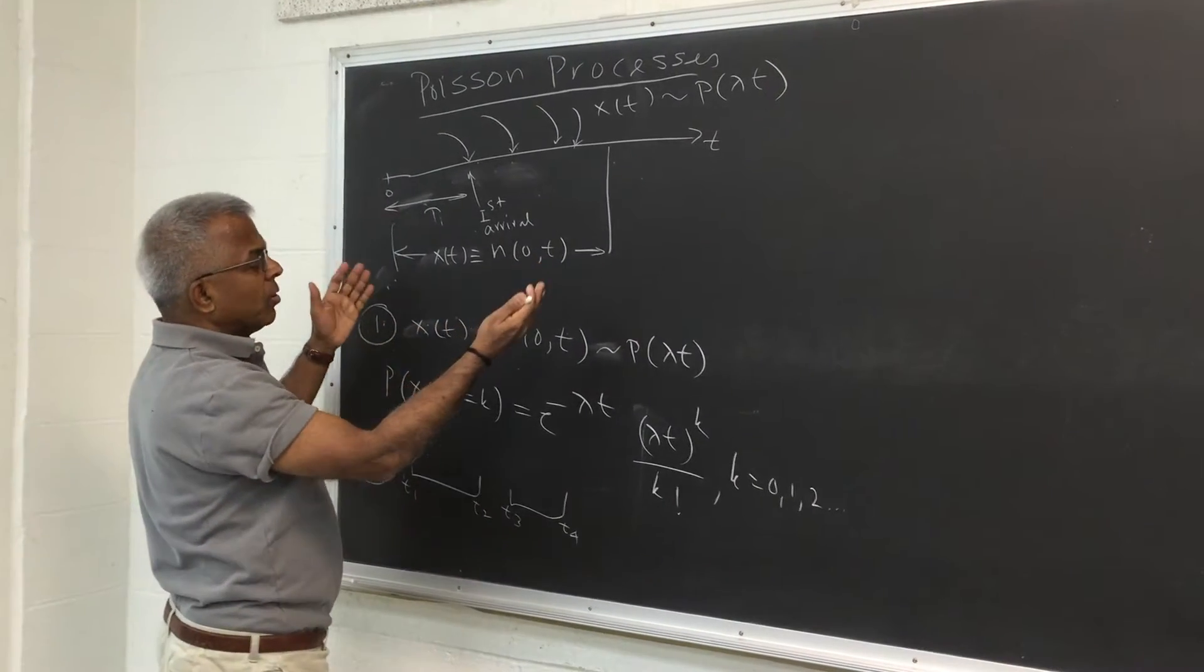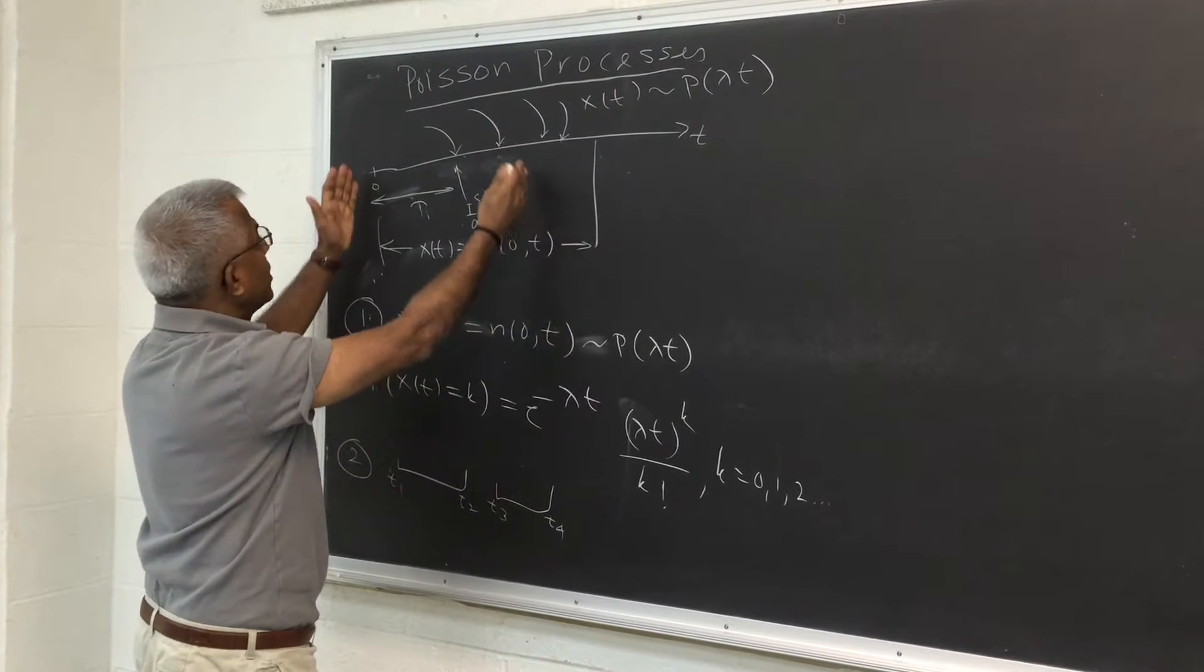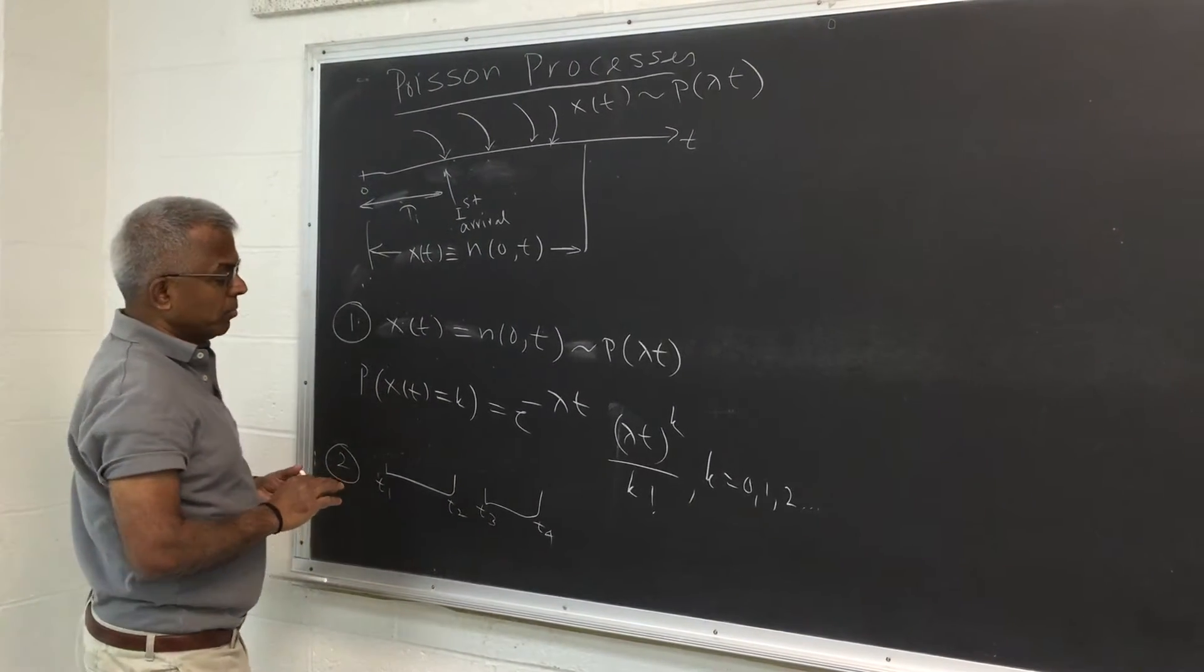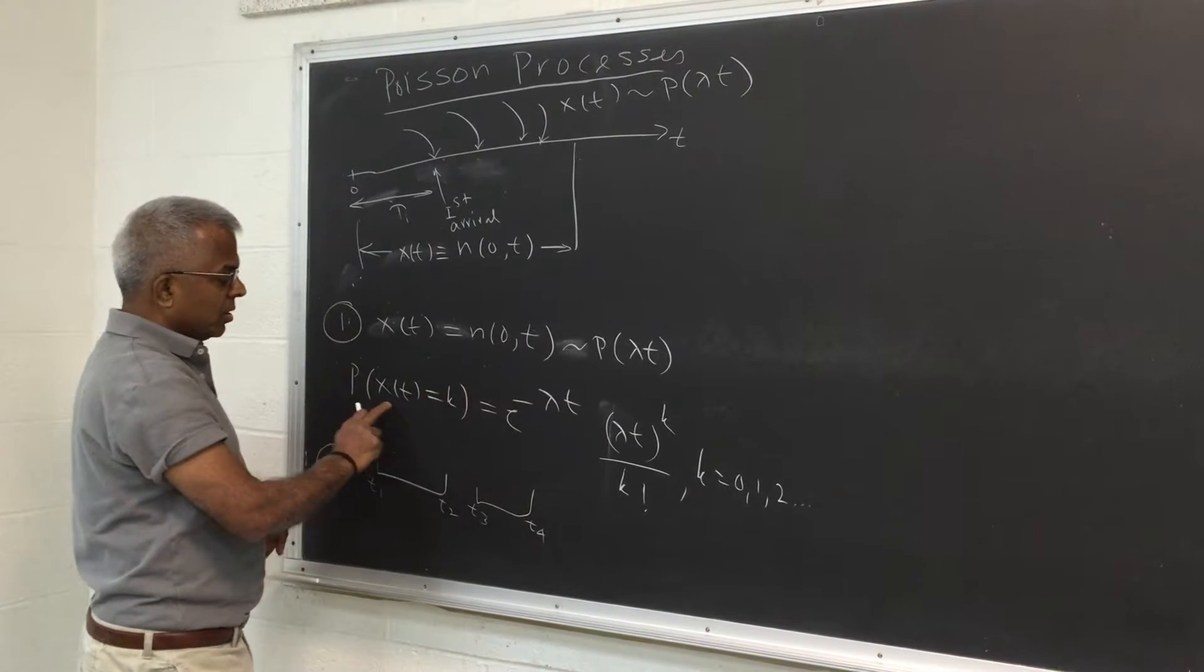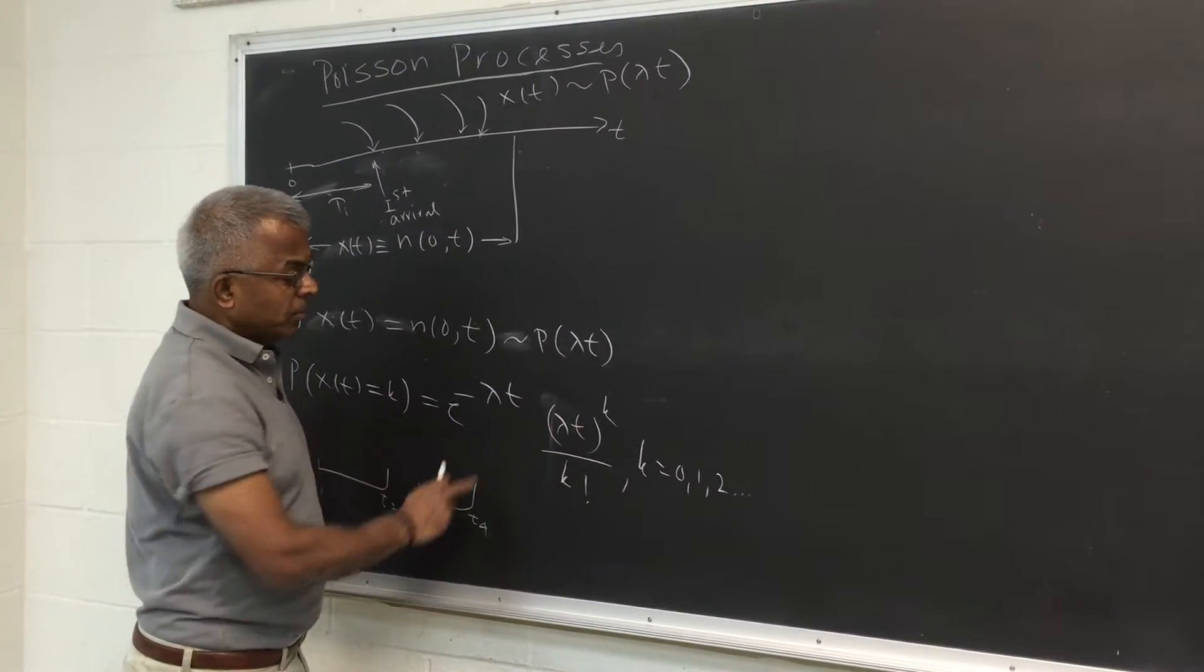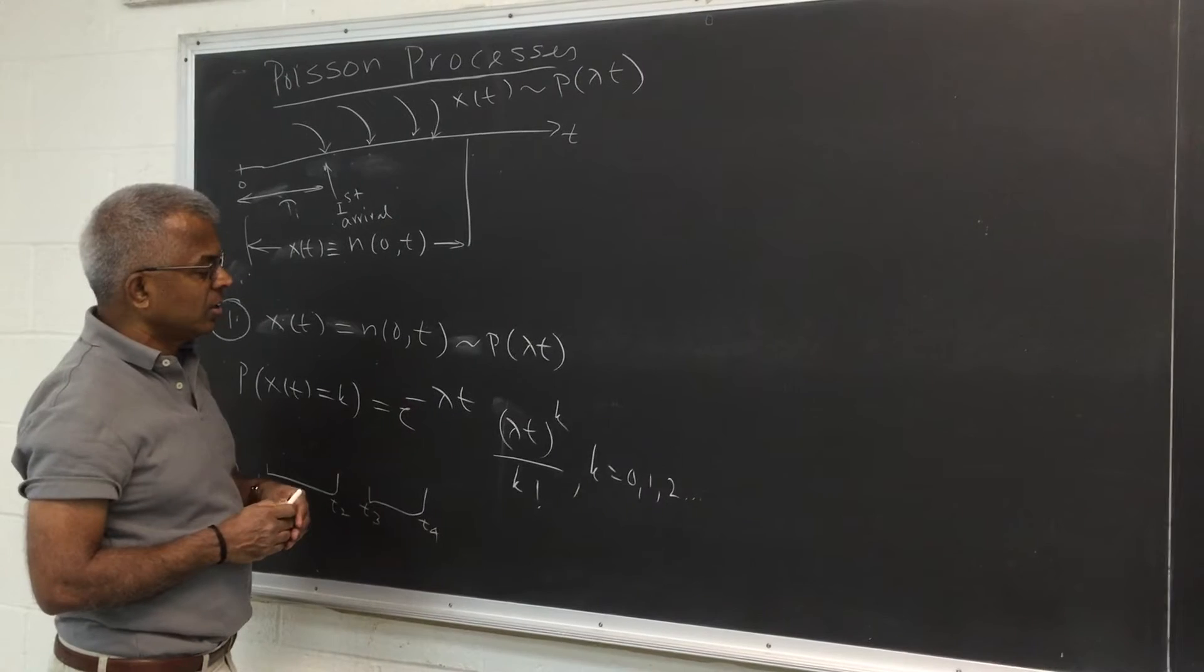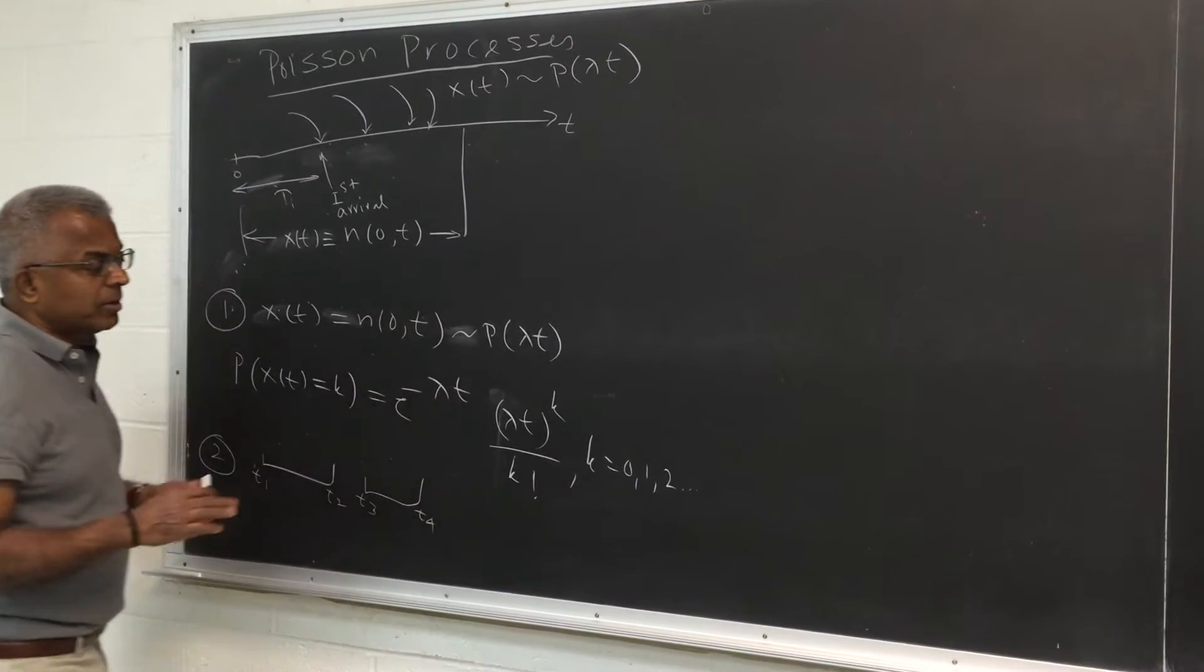What we mean by Poisson processes is maybe two mild conditions. If you take some interval zero to t, then the number of arrivals in that duration looks like a Poisson random variable. Let me denote x of t to be the number of arrivals in zero to t. So x of t equal to k looks like a Poisson random variable with parameter which is proportional to the duration of the interval. In this case it is t, and so the whole parameter is lambda t.